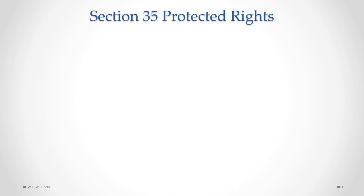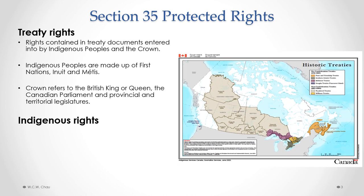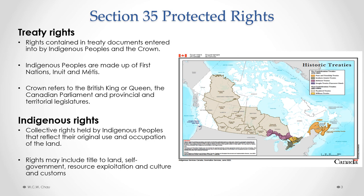So what are the rights protected by Section 35? There are two types mentioned in Subsection 35(1): Treaty Rights and Indigenous Rights. Treaty rights are the rights contained in treaty documents entered into by Indigenous peoples and the Crown. Indigenous peoples are made up of First Nations, Inuit, and Métis. The Crown refers to the British King or Queen, especially before Confederation in 1867, but also includes the Canadian Parliament and provincial and territorial legislatures. Indigenous rights is a broader category of collective rights held by Indigenous peoples that reflect their original use and occupation of the land. These rights may vary and may include title to land, self-government, resource exploitation, and culture and customs.